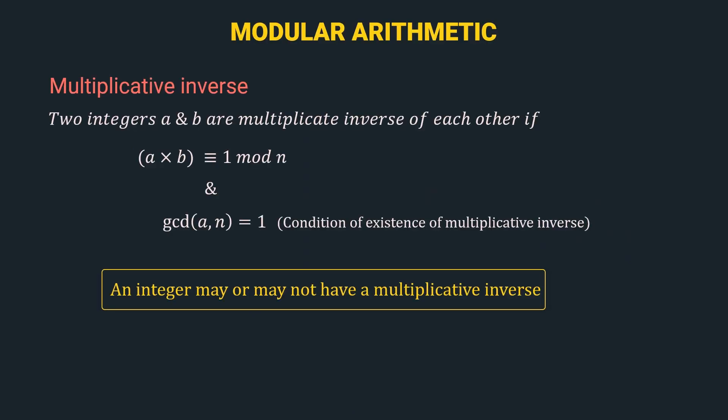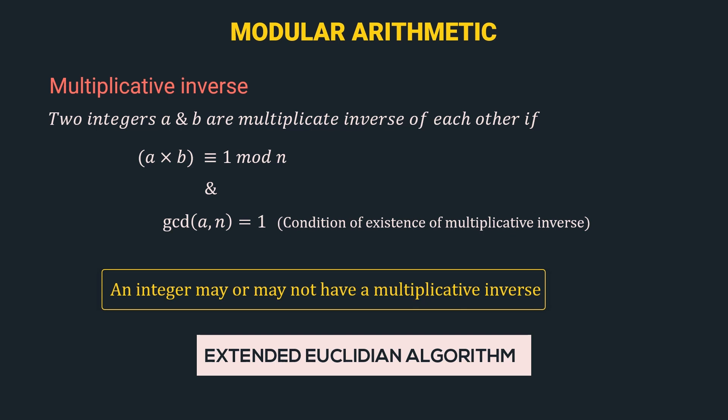In the previous video we learnt about the definition of multiplicative inverse. Two integers a and b are multiplicative inverses of each other if a × b is congruent to 1 mod n, and the gcd of a and n is equal to 1, which is the condition of existence of multiplicative inverse. Also, an integer may or may not have a multiplicative inverse. In this video, we are going to learn how to calculate the multiplicative inverse of a number using the extended Euclidean algorithm.